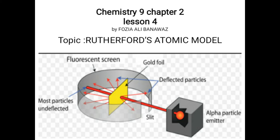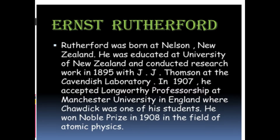Today we are going to study about a very important experiment — discovering the first model of atom. This is none other than Ernest Rutherford's atomic model. The picture shown illustrates the experiment which was performed, and as a result the atomic model was made. First, let's get some information about the scientist.